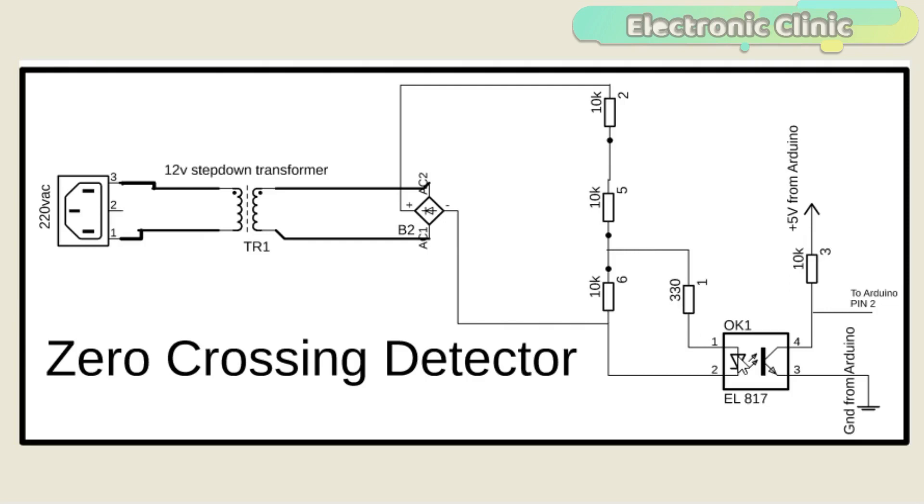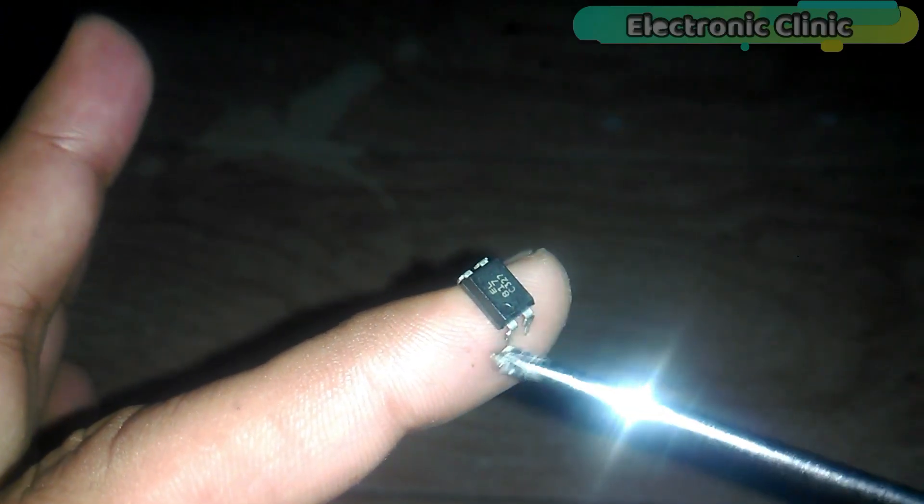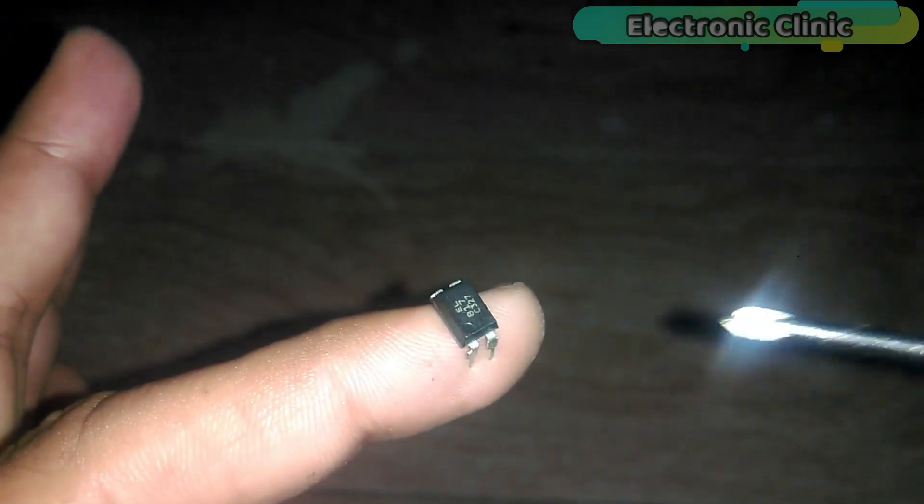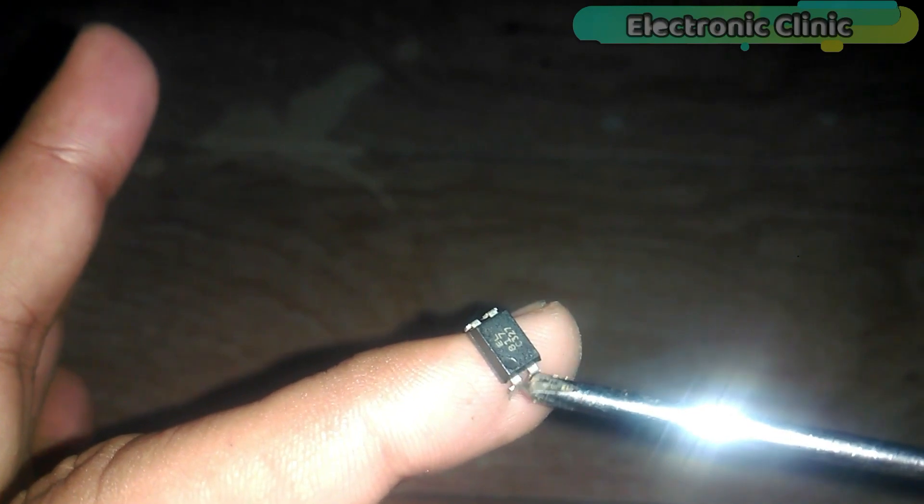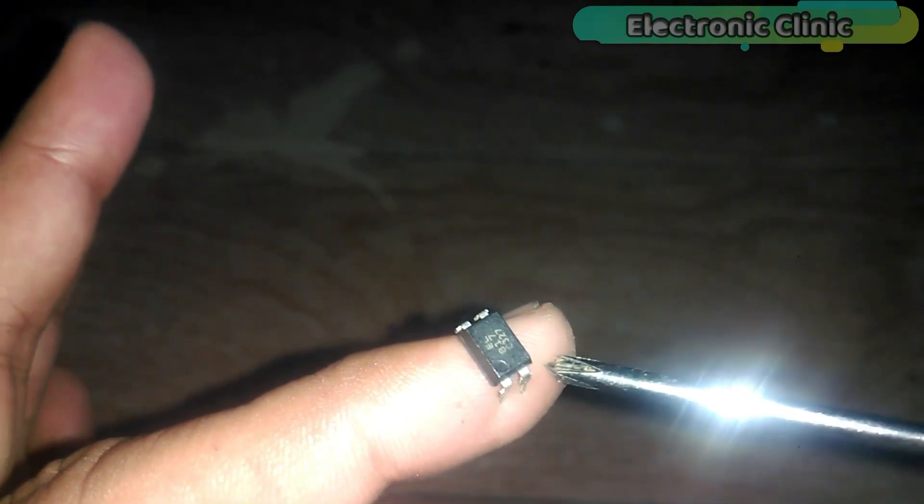This is the EL817 optocoupler. As you can see it has a total of four legs: leg number one is the anode and leg number two is the cathode; leg number three is the emitter while leg number four is the collector.